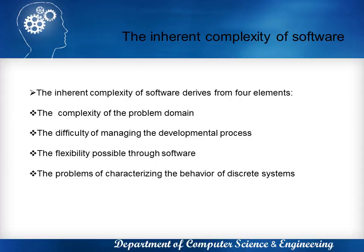And the inherent complexity of software. The inherent complexity of software derives from four elements: the complexity of the problem domain, the difficulty of managing the developmental process, the flexibility possible through software, and the problems of characterizing the behavior of discrete systems.